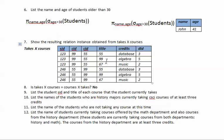That's why we call it very expensive and why we apply other operators before solving queries involving this operation. Now, number eight: is takes times courses the same as courses times takes? The answer is no, because changing the order means the last four columns become the first and the first two become the last.